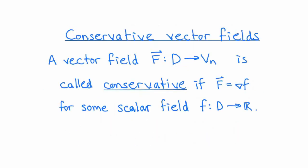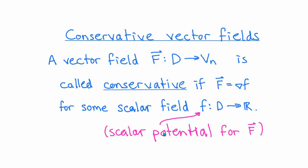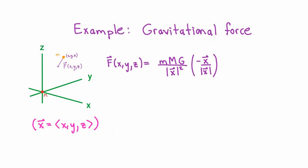Vector fields that can be written as the gradient of a scalar field play an important role in this subject. If a vector field F can be written as the gradient of a scalar function f, then we say the vector field is a conservative vector field, and we call f a scalar potential for F. Let's look at an important example from physics.